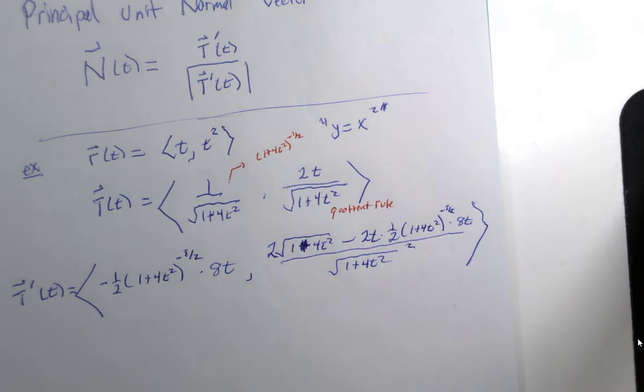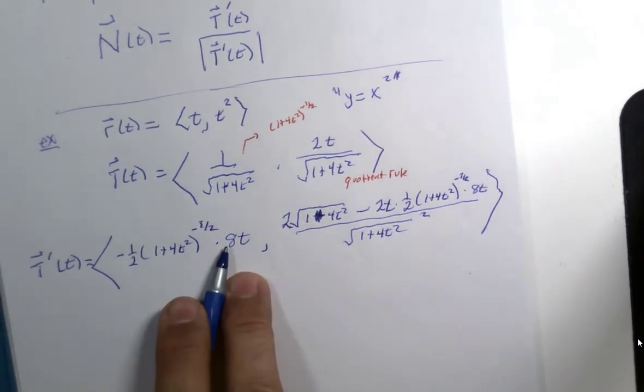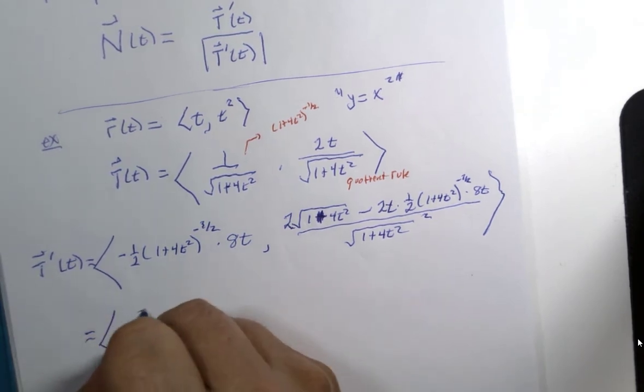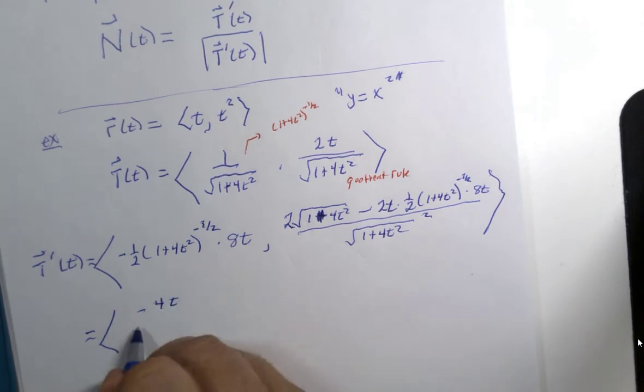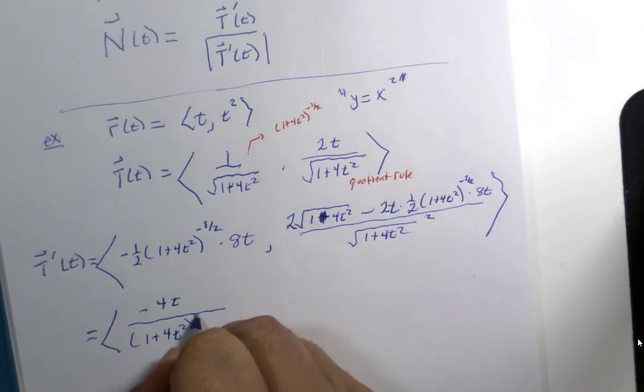Now I'm going to do a little bit of clean up. So half of 8 is 4. This is going to become negative 4t divided by 1 plus 4t squared to the three halves power. There are other ways of writing this expression.